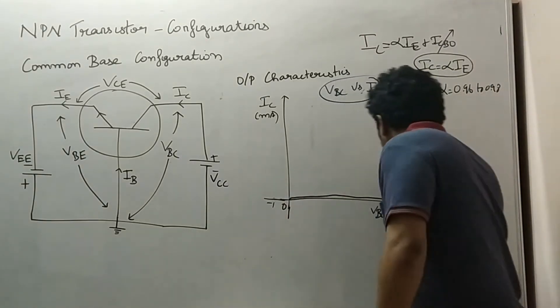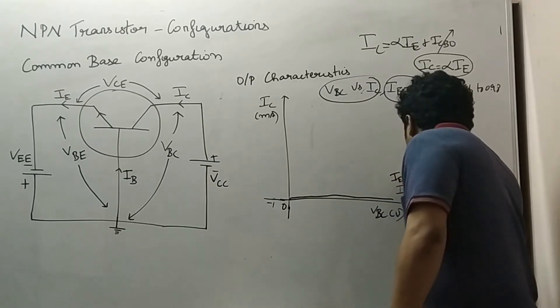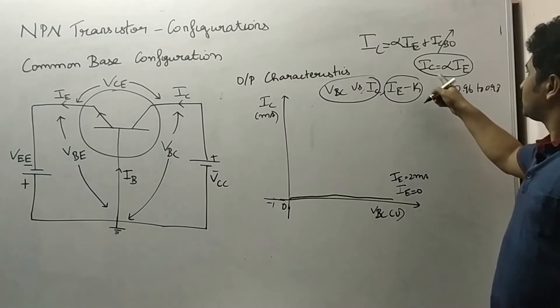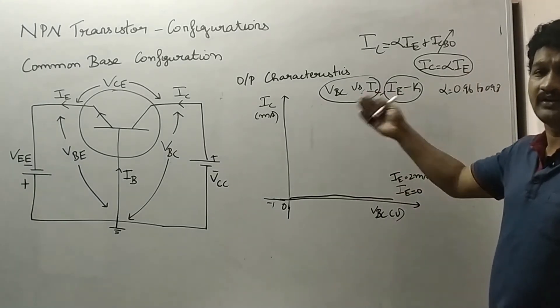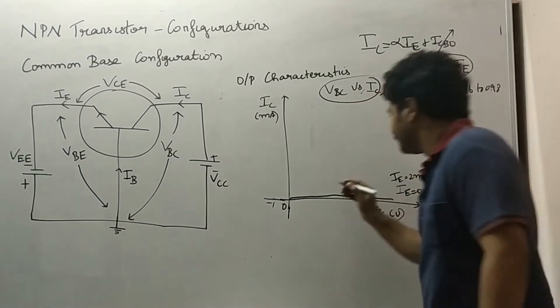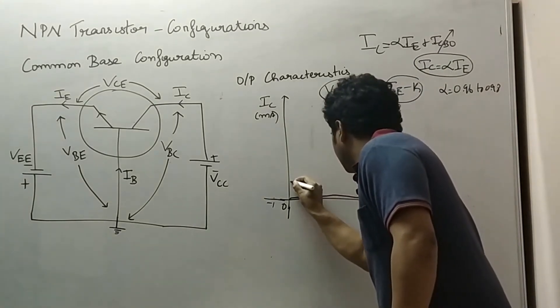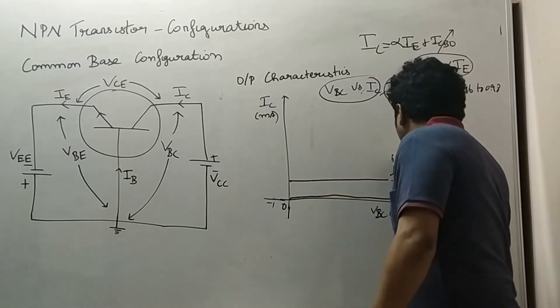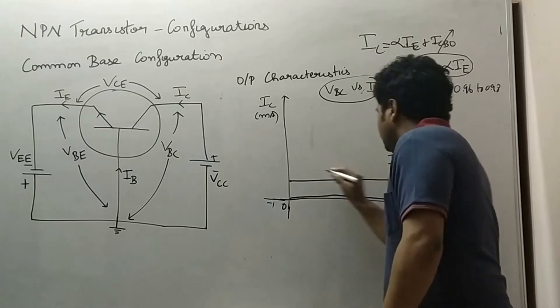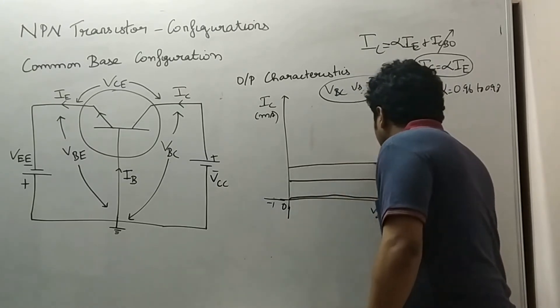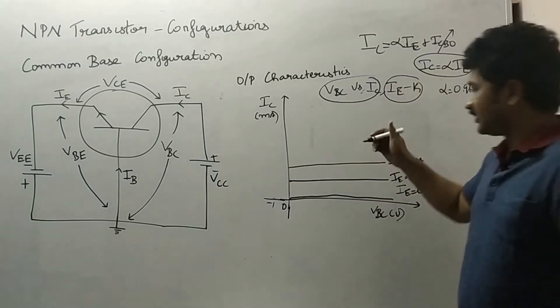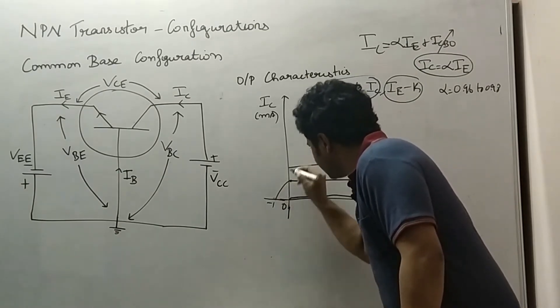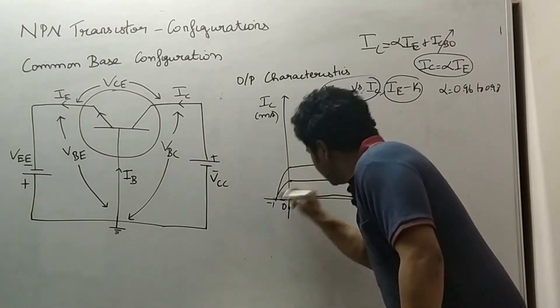I am setting IE to 2 milliamps. We know the relation IC equal to alpha IE, so the collector current is also going to be in the same manner. If I set IE to 4 milliamps, we can expect the same pattern of curve, and we can join this region. Similarly for 6 milliamps.